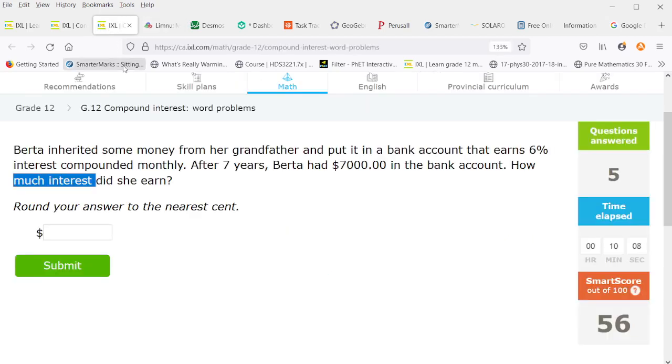So she had $7,000. We do the first part as usual. 0.06 divided by 12. Exponent 12 times 7 is 84. So she started with $4,604.14. She ended with $7,000. So $7,000 minus the $4,604.14 gives us the interest she earned, which is $2,395.86.